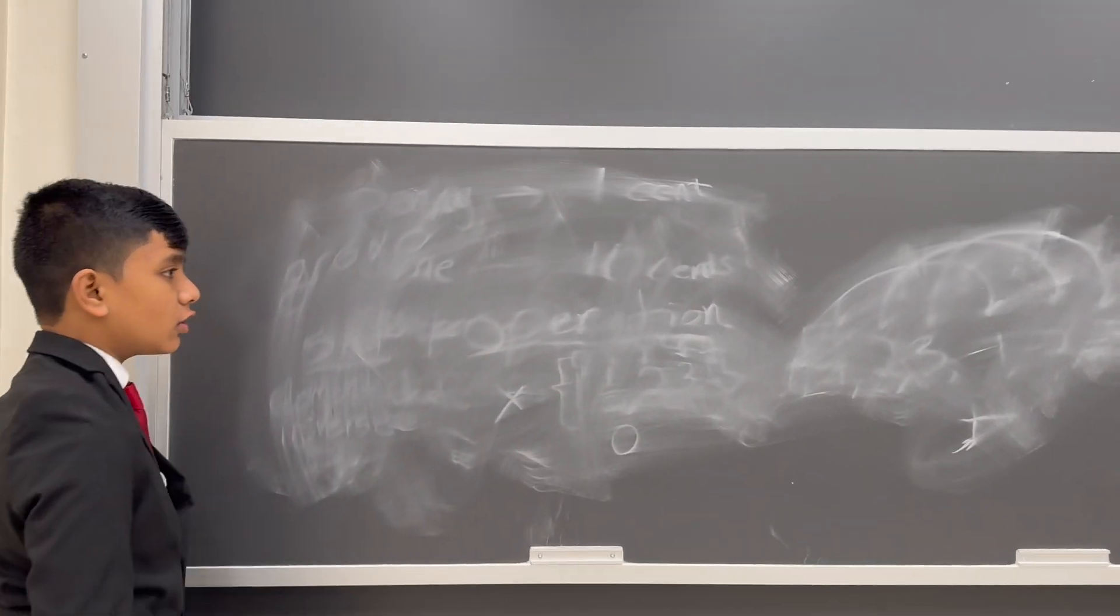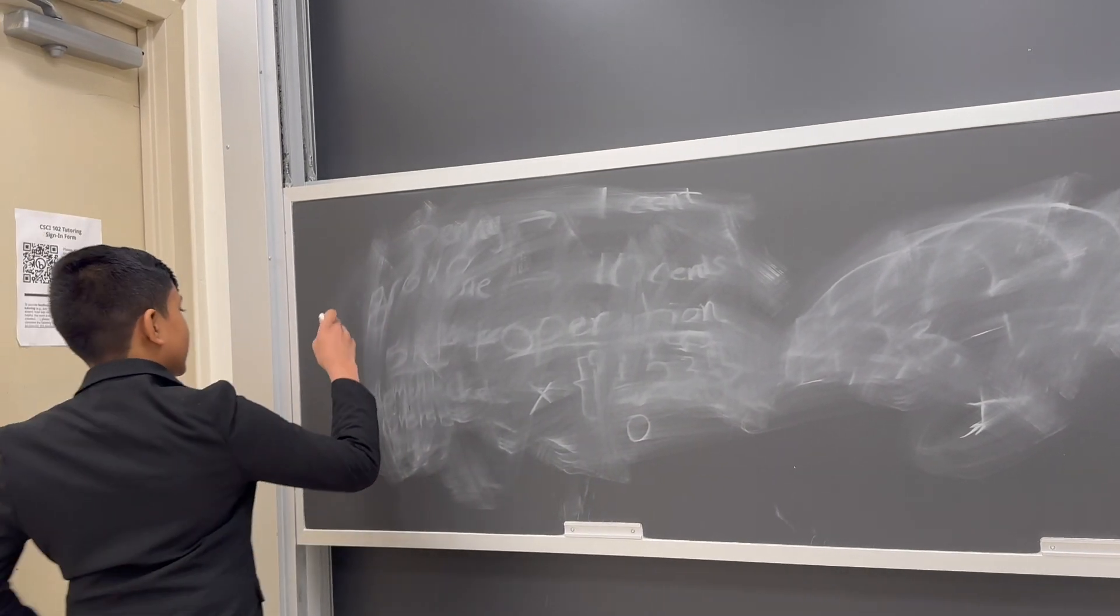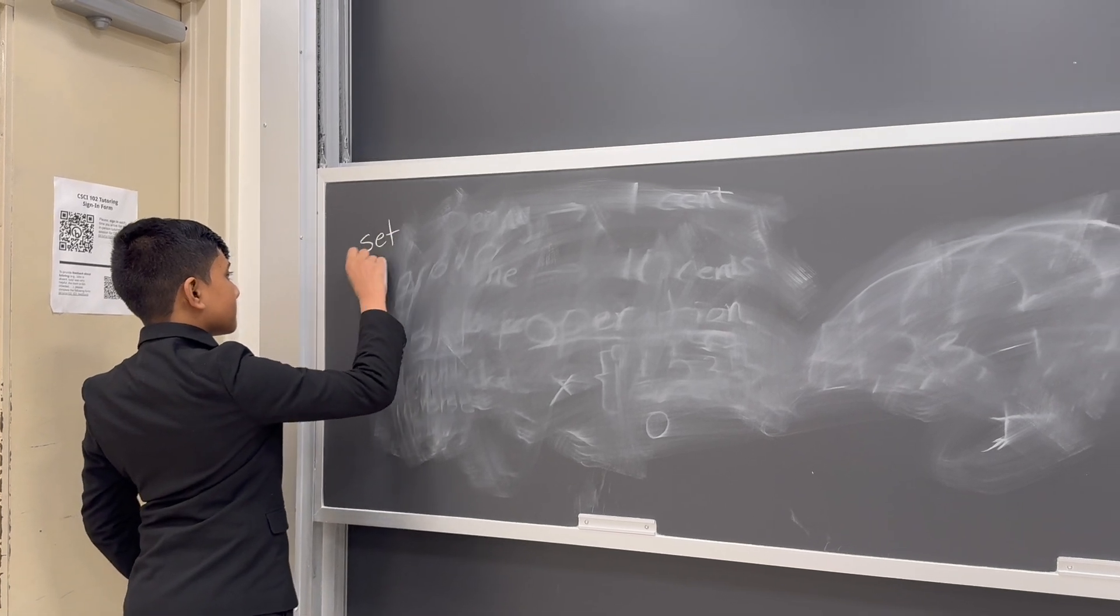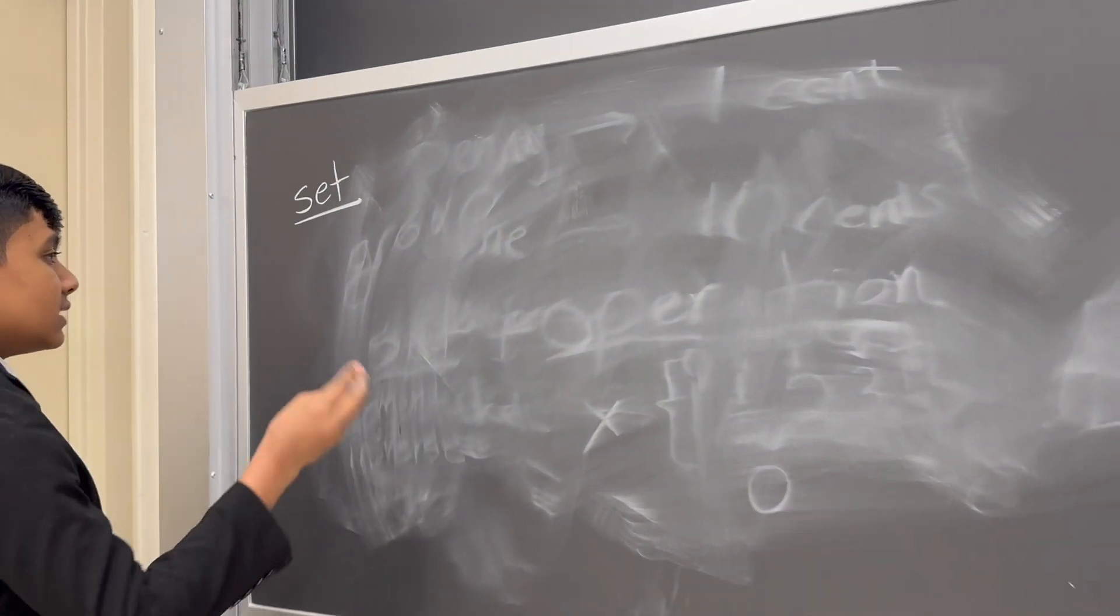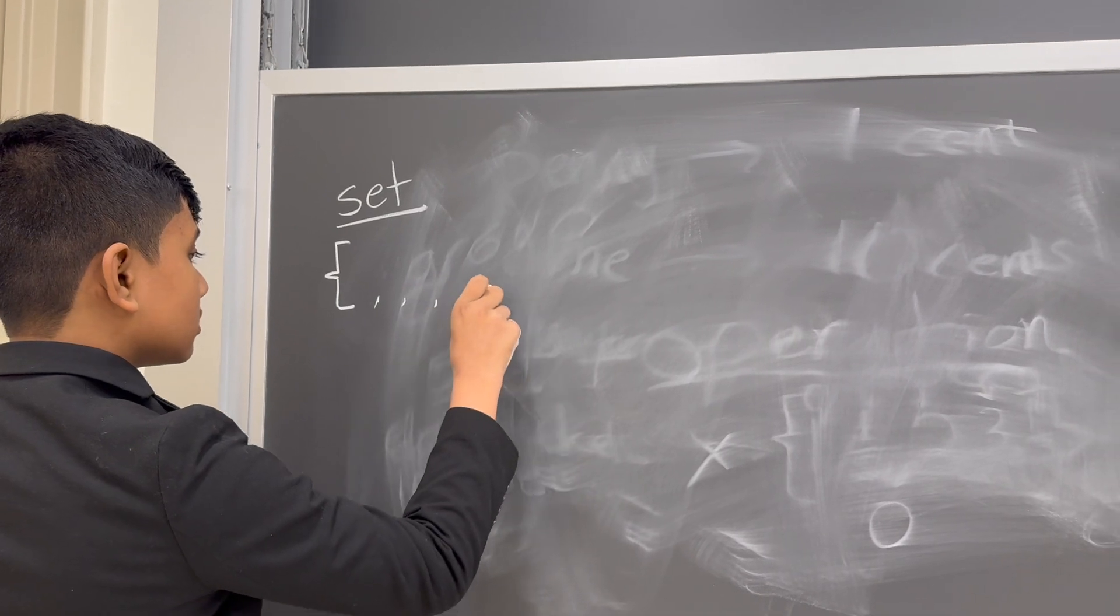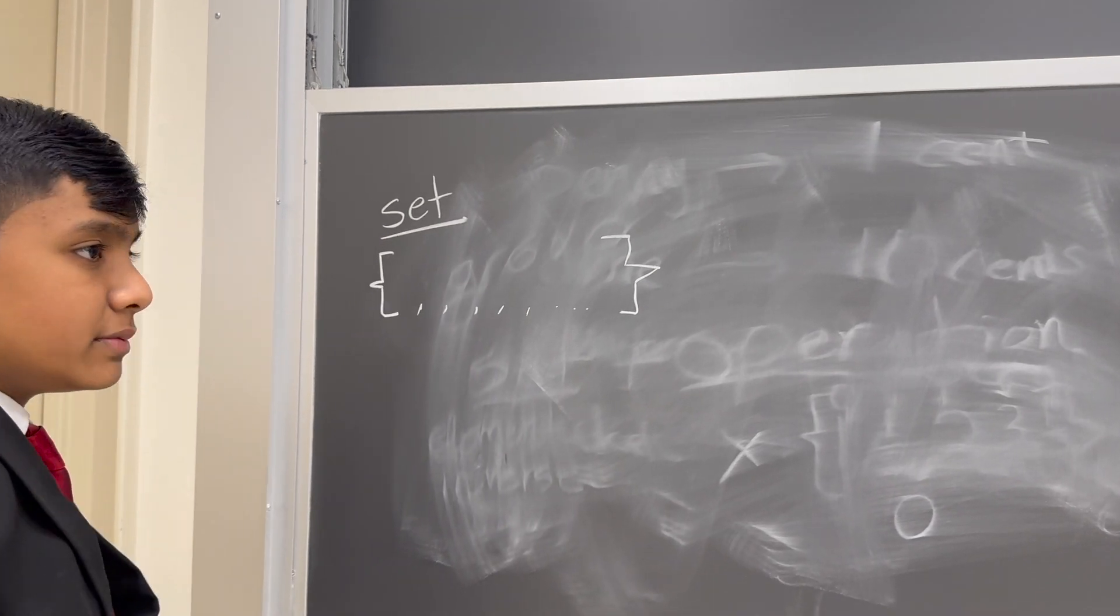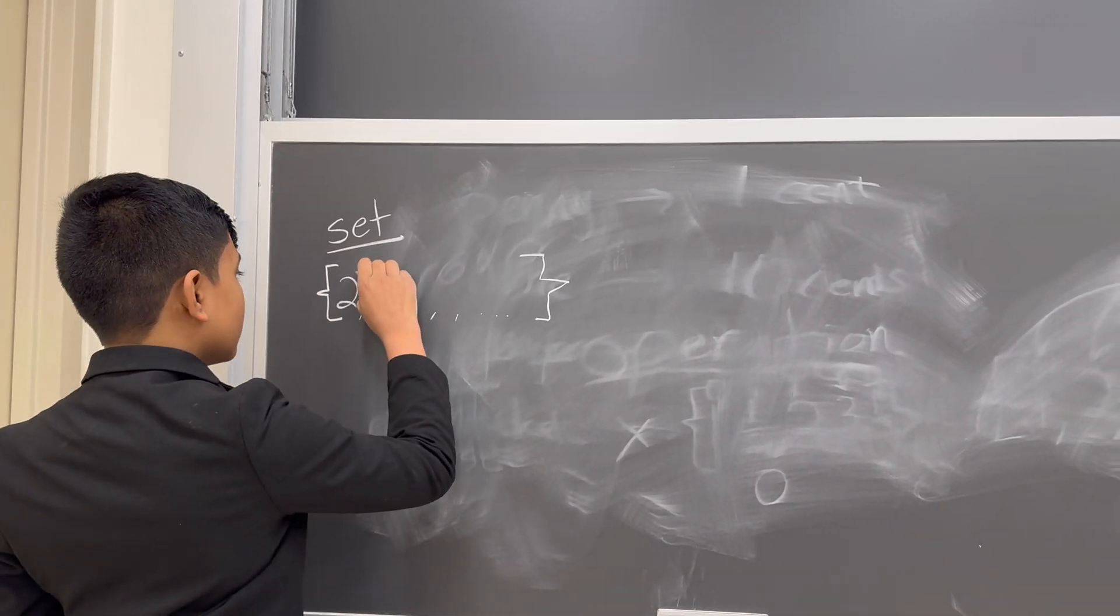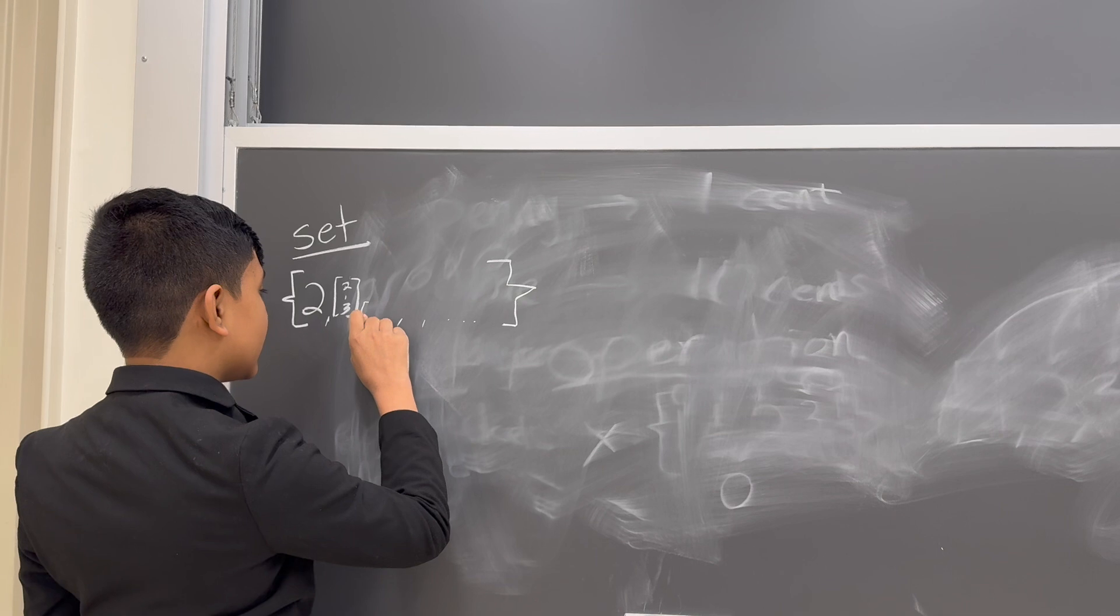So first of all, let's talk about what a set is, because that's the most fundamental thing we'll use. So what is a set? A set is a collection of multiple elements. And these elements could be anything. They could be scalar, they could be vectors, they could even be other sets.